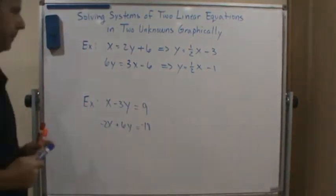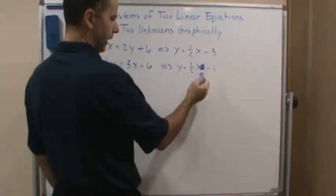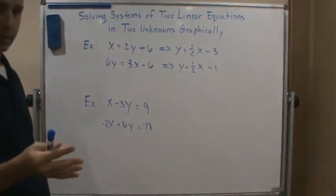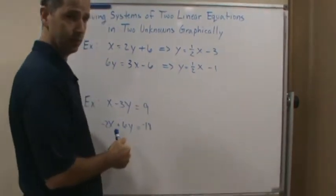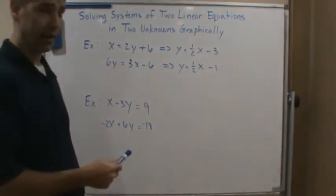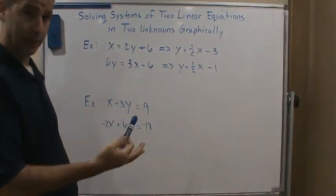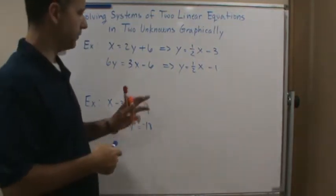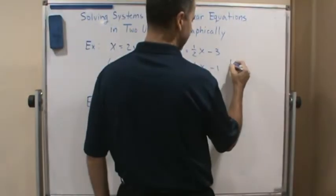Notice these two equations — these two lines — have the same slope, but they have different y-intercepts. So they're not the same line. They intersect at two different y-intercepts, but they rise at the same rate. So they go up and over with the same numbers. This tells us that these are two parallel lines. Any two lines that have the same slope and different y-intercepts are parallel lines, and parallel lines never intersect. So the solution to this system doesn't exist — there are no solutions. This is what we call an inconsistent system.